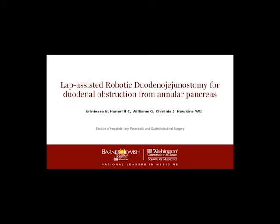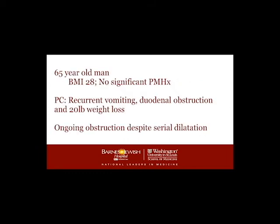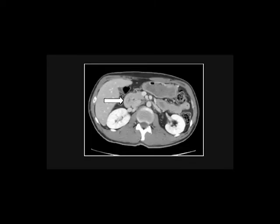Duodenal jejunostomy for duodenal obstruction from annular pancreas. The patient had symptoms of duodenal obstruction and ongoing obstructive symptoms which recurred despite serial dilatation. He remained otherwise constitutionally well and had no major medical comorbidities. Imaging showed the typical appearance of an annular pancreas causing circumferential enveloping of the duodenum.